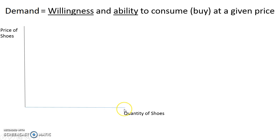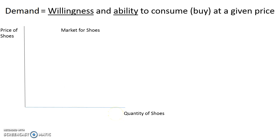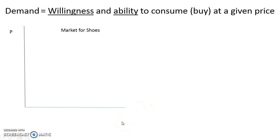When we talk about graphing demand, you have a vertical axis and a horizontal axis. The vertical axis will always be labeled with price and the horizontal axis will be labeled with quantity. The market title here is the market for shoes. A graph is not a graph unless it's properly labeled. Because we've labeled it the market for shoes, we can just label the axes P for price and Q for quantity. If we're lacking a title, then P and Q don't really stand for anything, so a title is really important.